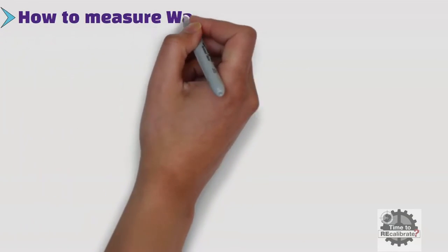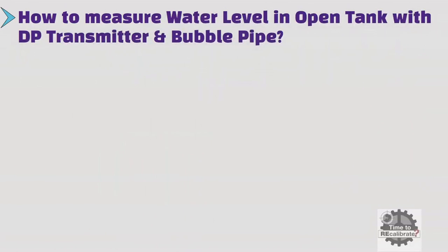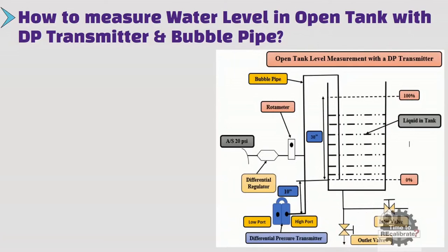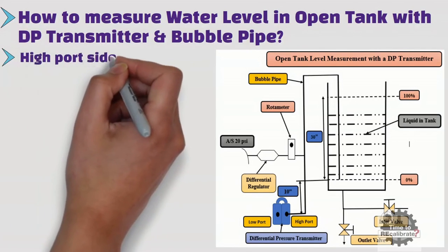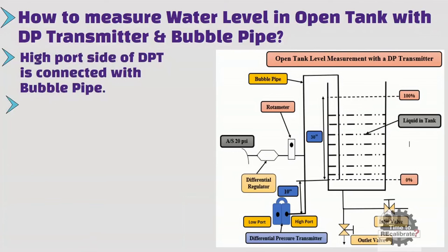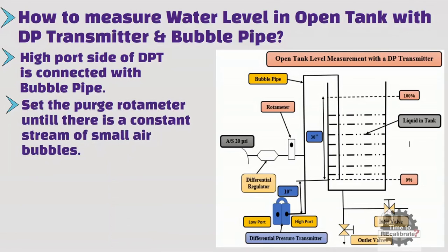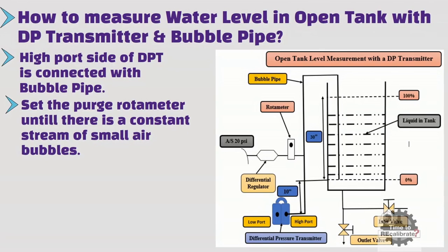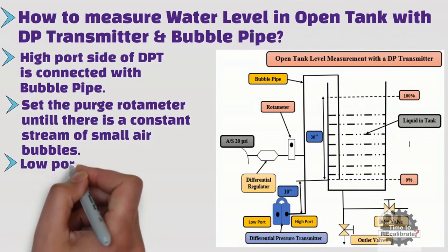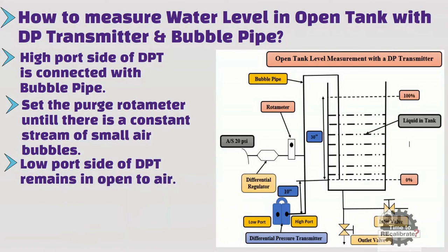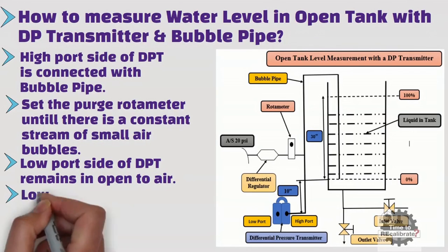How to measure water level in an open tank with a differential pressure transmitter and bubble pipe? As you can see from the picture, the differential pressure transmitter is installed 10 inches below the minimum level of liquid in the tank, and the high port side of the DPT is connected with the bubble pipe. Set the purge rotameter until there is a constant stream of small air bubbles. Because of the bubble pipe, the transmitter position does not affect the calibration range, and we can neglect the transmitter installation height. The low port side of the DPT remains open to air, so it has 0 inches H2O pressure.